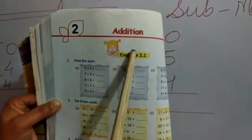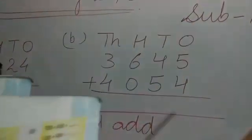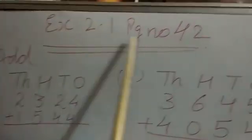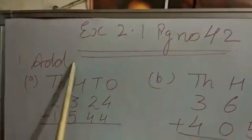So see, this is chapter 2, addition. According to our syllabus, our exercises started from page number 42, exercise 2.1. So I have written exercise 2.1, page number 42. This is the addition sum.